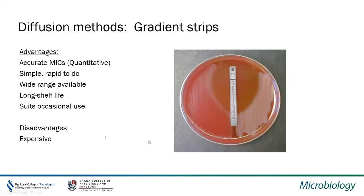Gradient strip methods have some advantages similar to microbroth dilution, but are more widely regarded as appropriate for other anaerobic bacteria beyond just the fast-growing ones. They give an accurate MIC, are simple and rapid, and you may already have these strips in stock for your aerobes. They have a long shelf life and suit occasional use, though they are expensive.